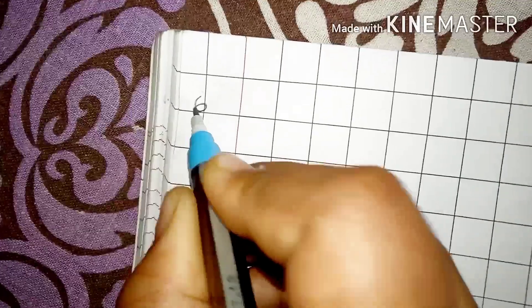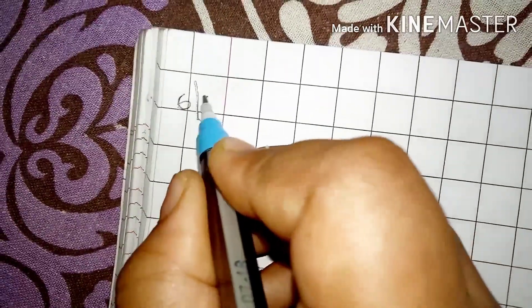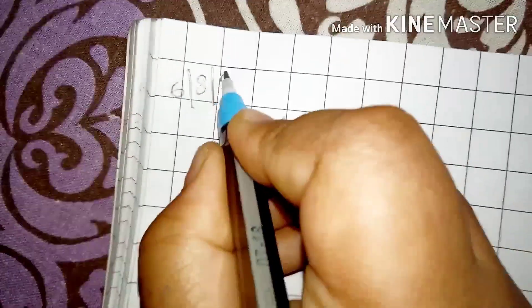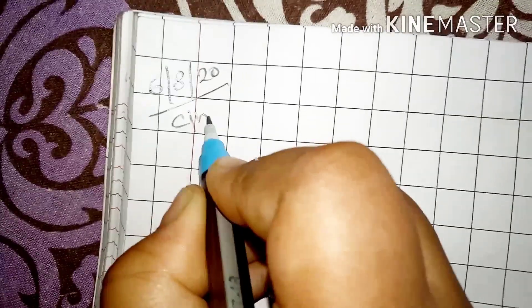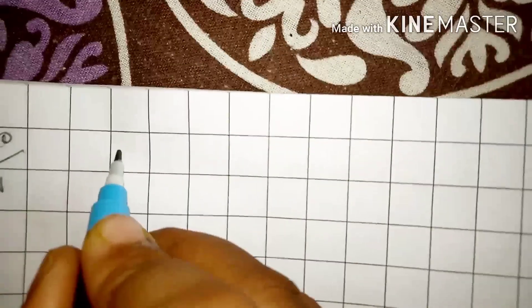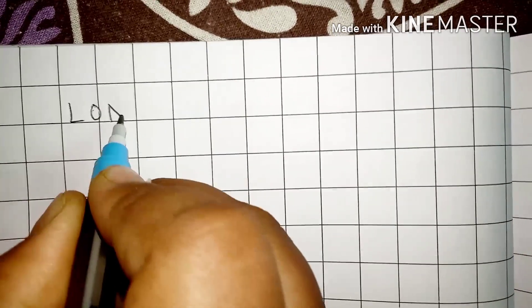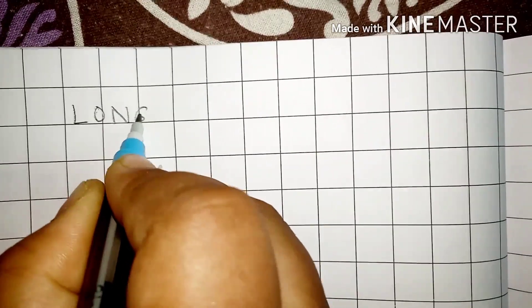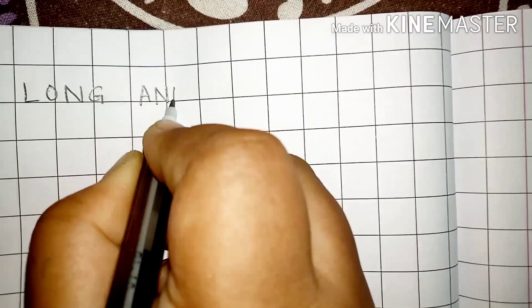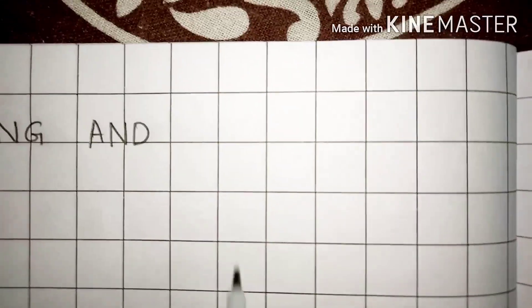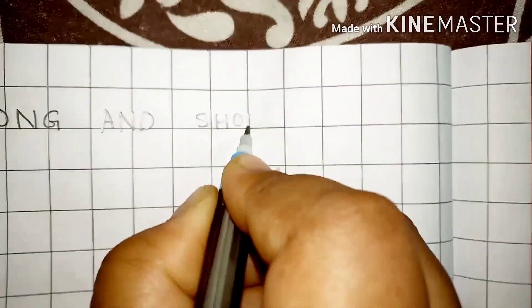At first we will write the date 6, 8 which is the month August and then write here 20 which is the year 2020. Give CW which means classwork and write on the top LONG and SHORT.